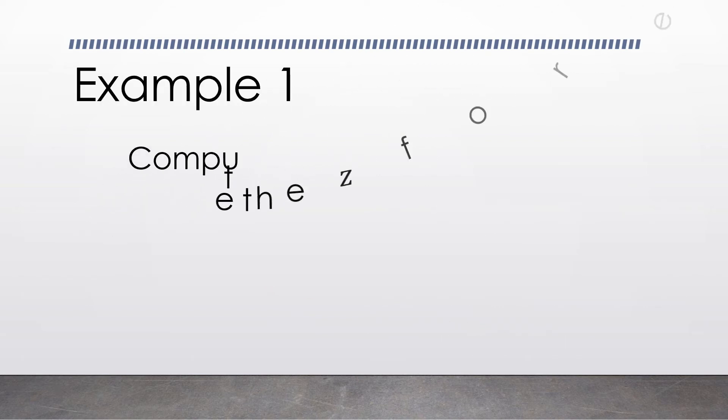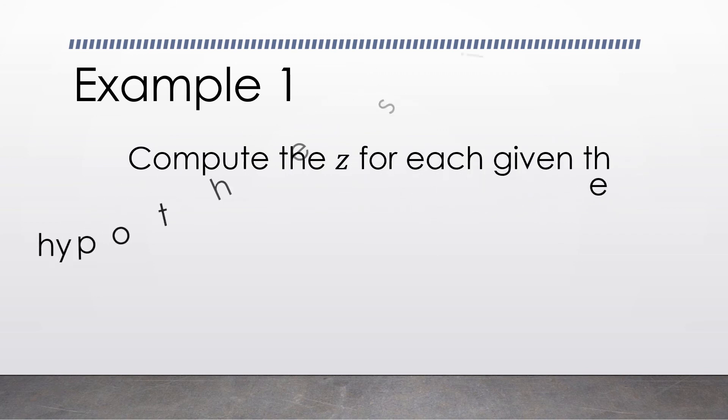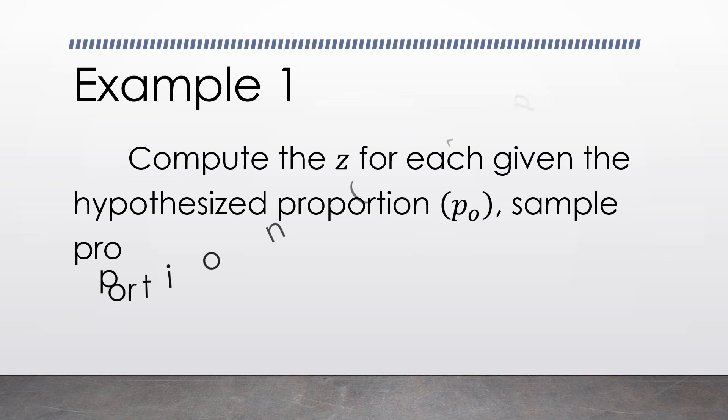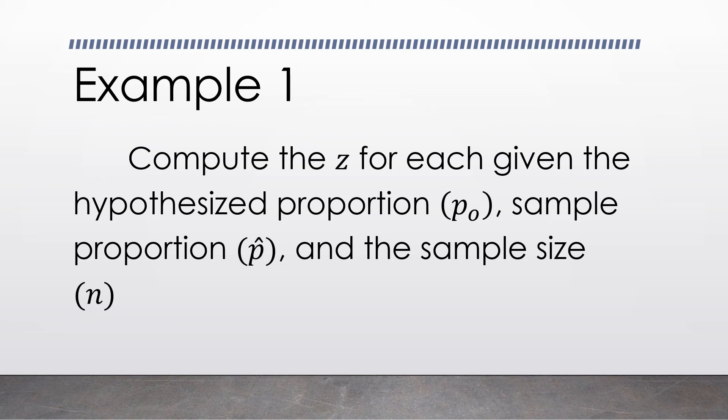To give you a first example, let us compute the z for each given: the hypothesized proportion, sample proportion, and the sample size. We are going to use the formula to compute. So, we have here